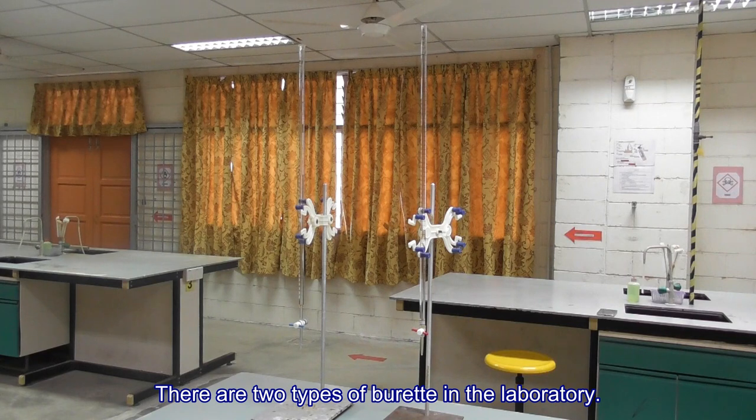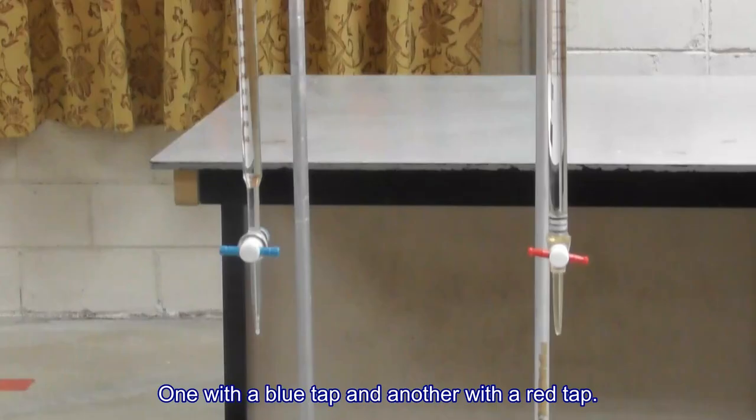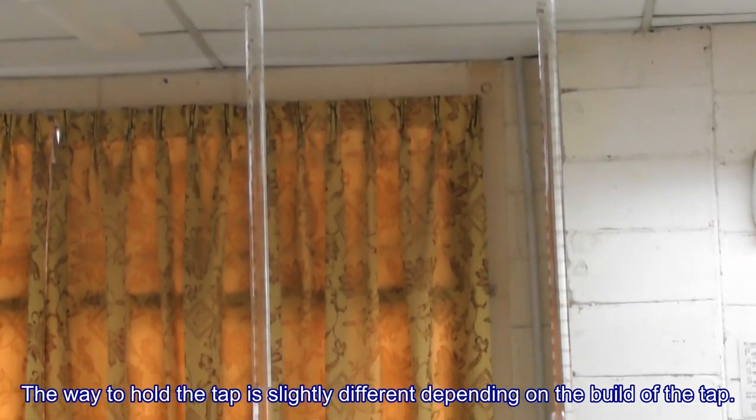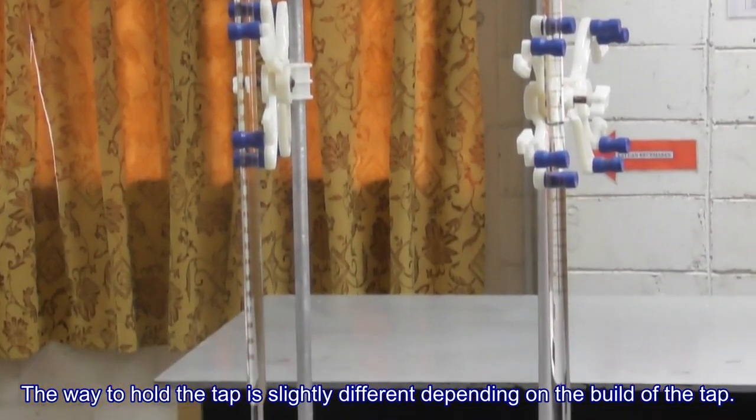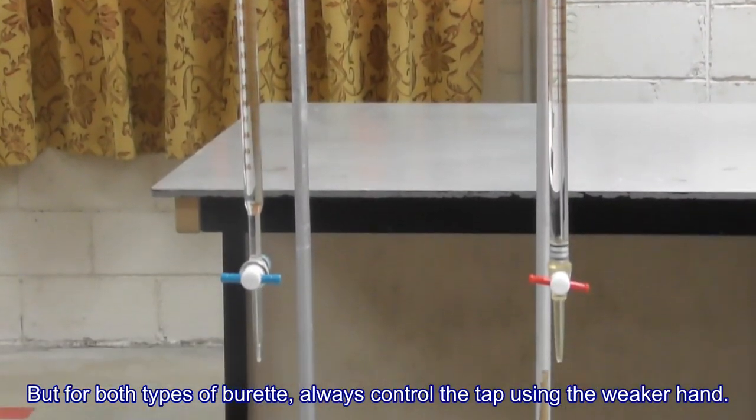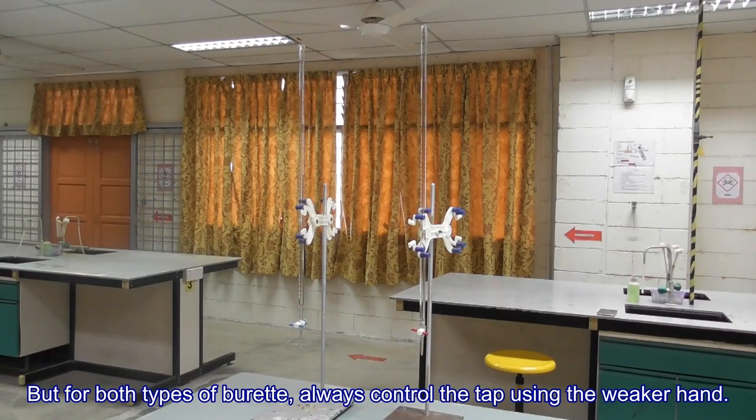There are two types of burette in the laboratory, one with a blue tap and another with a red tap. The way to hold the tap is slightly different depending on the build of the tap, but for both types of burette, always control the tap using the weaker hand.